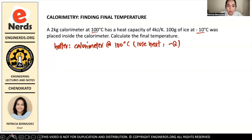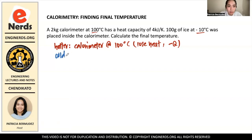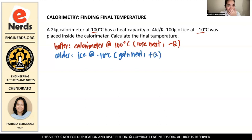The colder substance is ice at negative 10 degrees Celsius, because we know that heat flows from a hotter object to a colder object. Therefore, the ice is the one that will gain heat and will have positive Q.